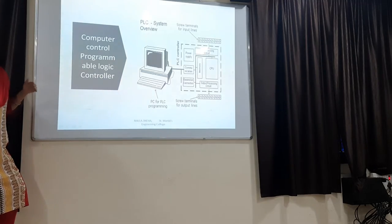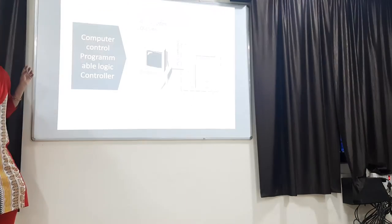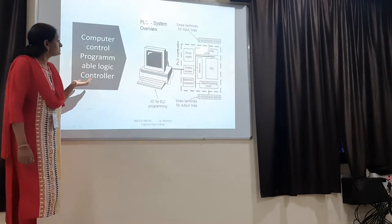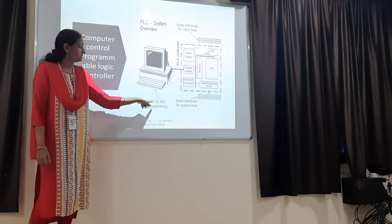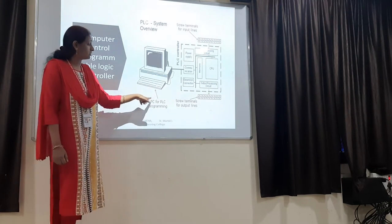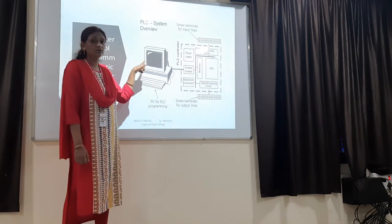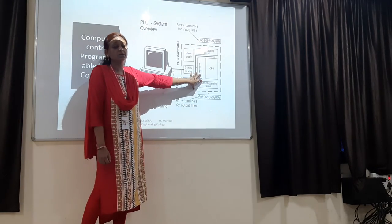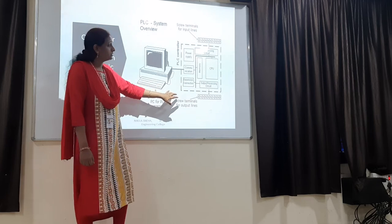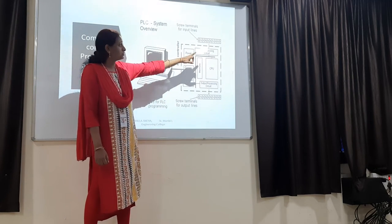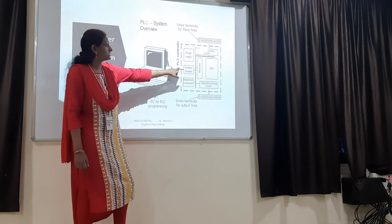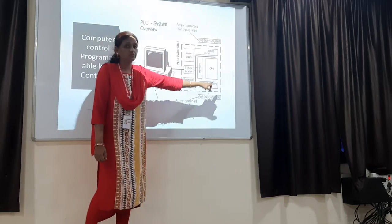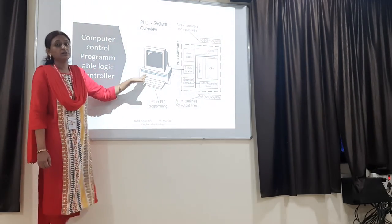A program runs the machining process and the logic control performs operations as per given specifications. Observing the figure, there is a PLC programming PC — a computer which controls all logic operations. It is connected internally with hardware and software. The PLC controller includes a CPU, memory stores, input processing circuit, output processing circuit, expansion connection, communication, and power supply. All of this together is known as the PLC controller, which is connected with the computer control programmable logic control.